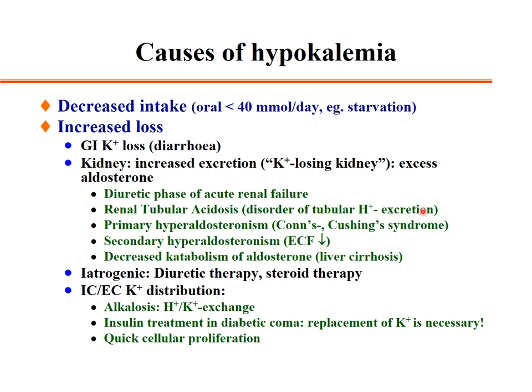Primary hyperaldosteronism in Conn syndrome or part of Cushing syndrome, secondary hyperaldosteronism when extracellular fluid decreases, problems with steroid catabolism such as aldosterone in liver cirrhosis, or iatrogenic causes from diuretic or steroid therapy can all induce hypokalemia.